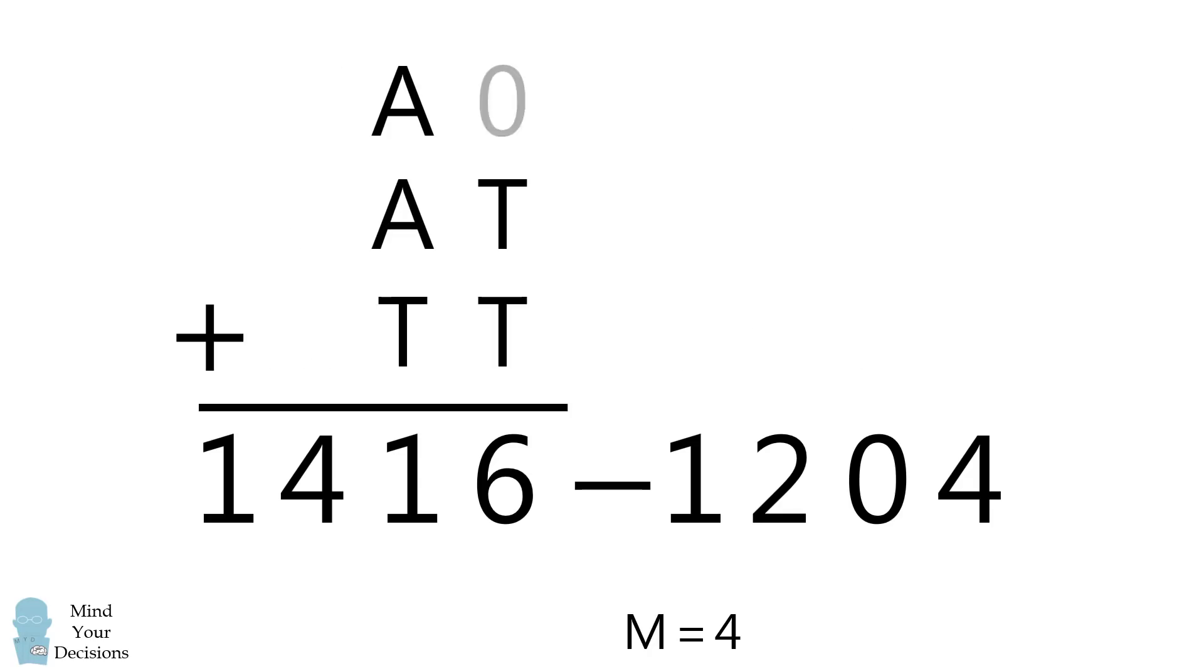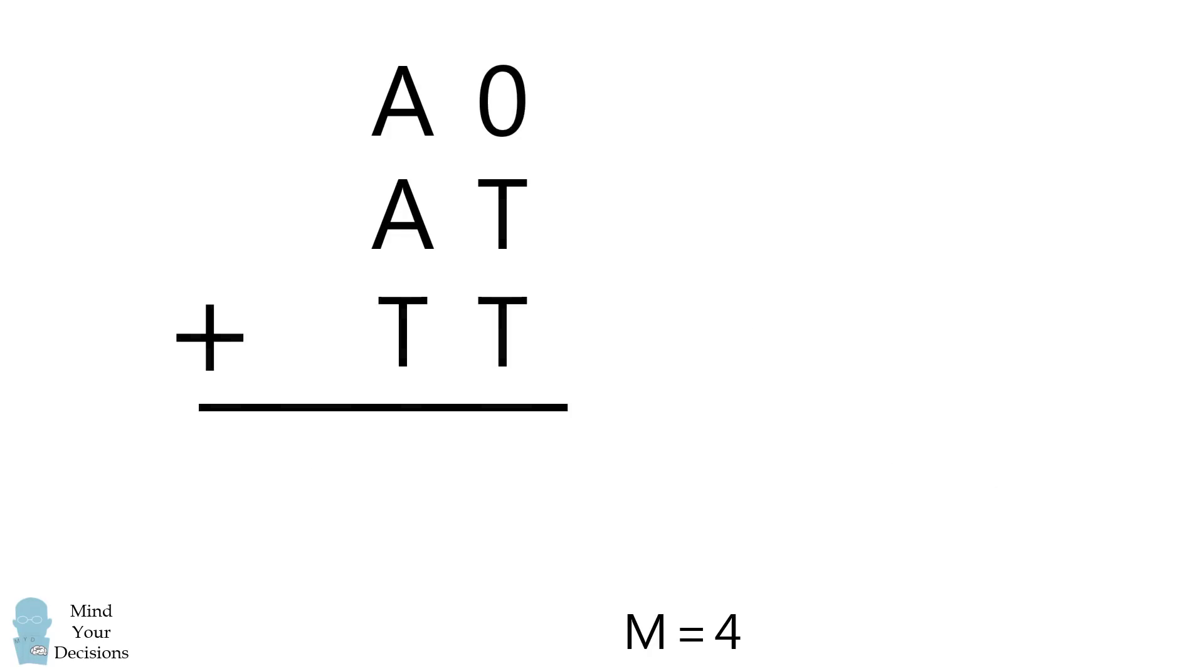If we subtract those out, we get the resulting sum of 212, and we have a new problem. We now need to solve for A and T.